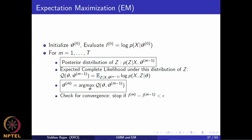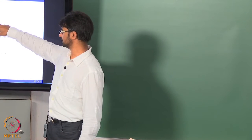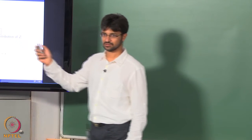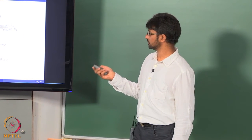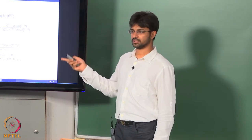The general EM algorithm is: guess the posterior distribution of the latent variables, then refine your guess by maximizing the Q function — the expectation of the complete data likelihood under the distribution of Z with your current guess. Today we are going to see that this procedure guarantees that the likelihood will increase in every iteration. This is the complete EM algorithm for estimating the parameters of a Gaussian mixture.